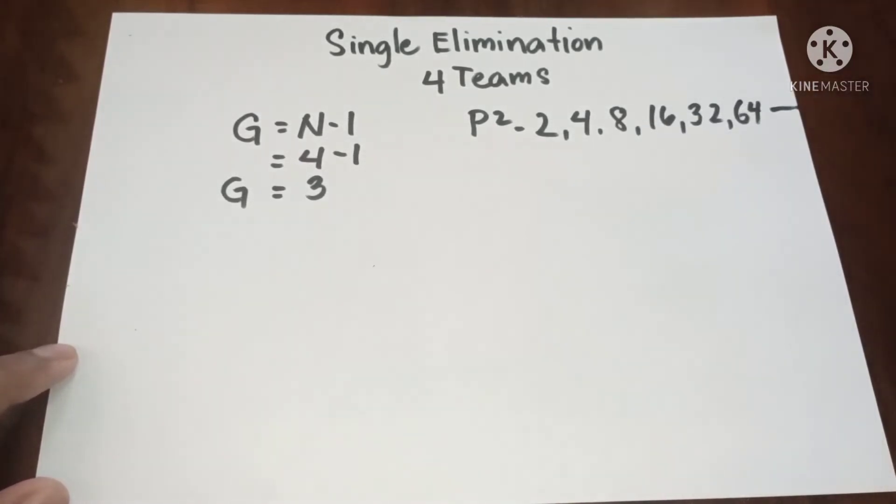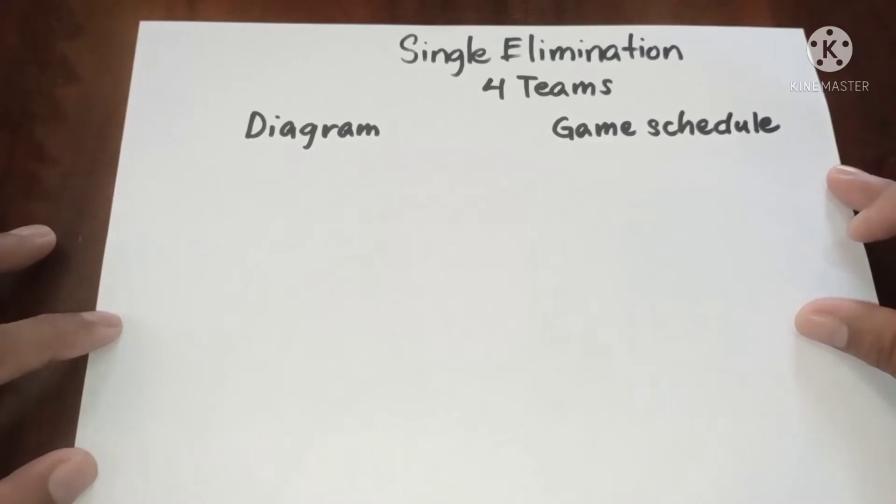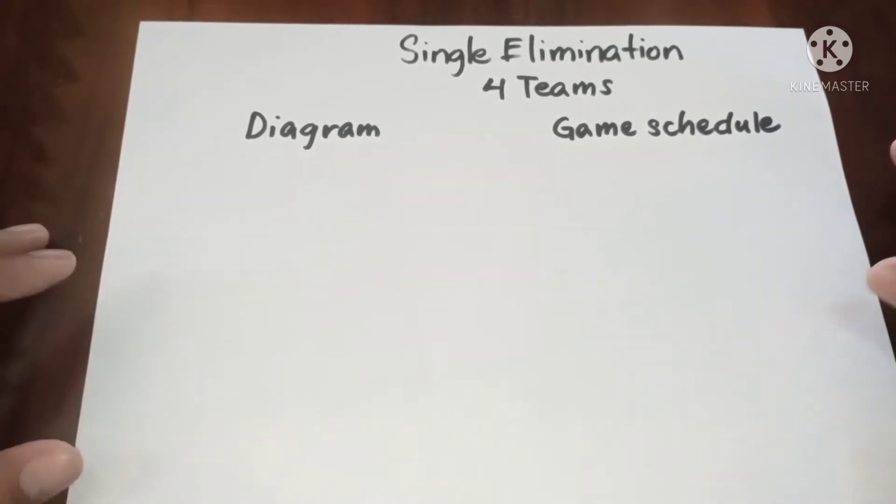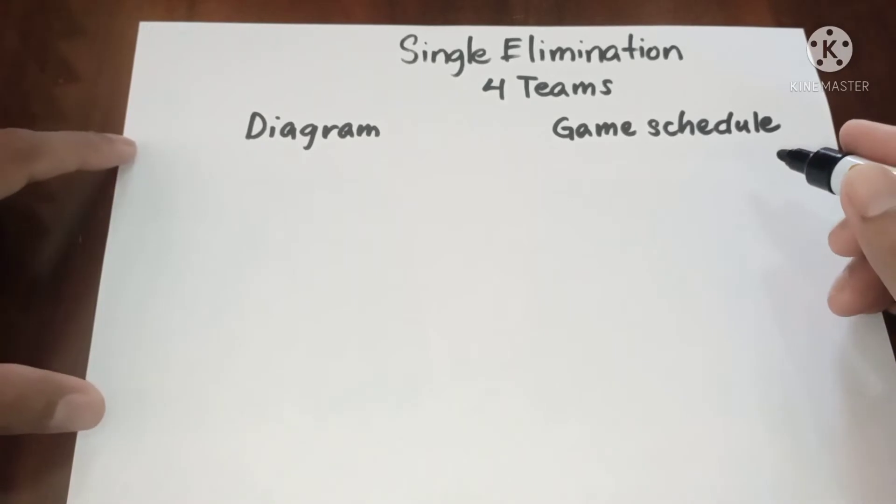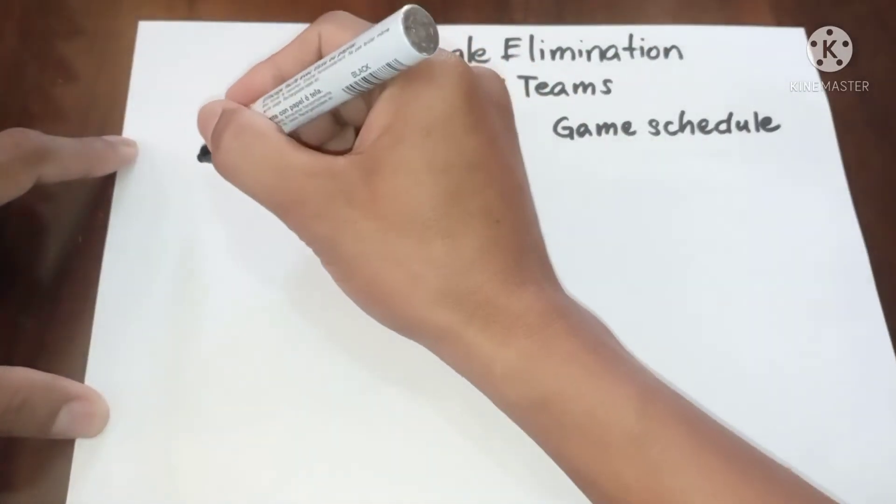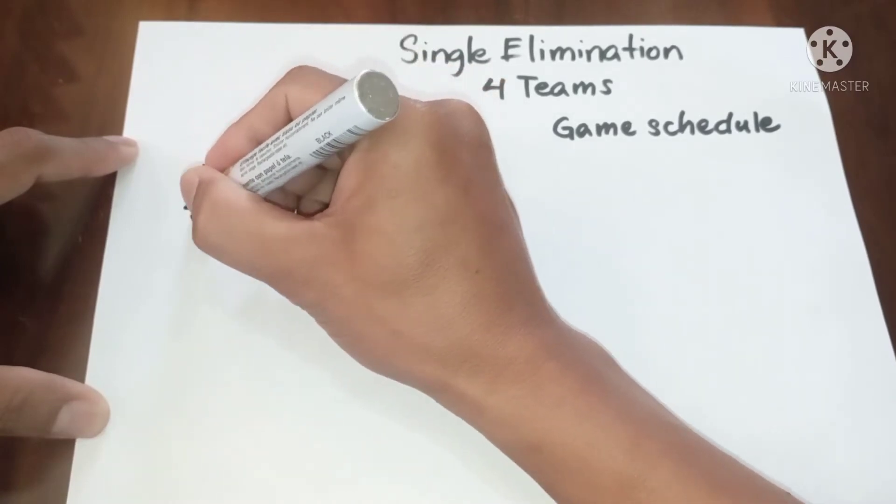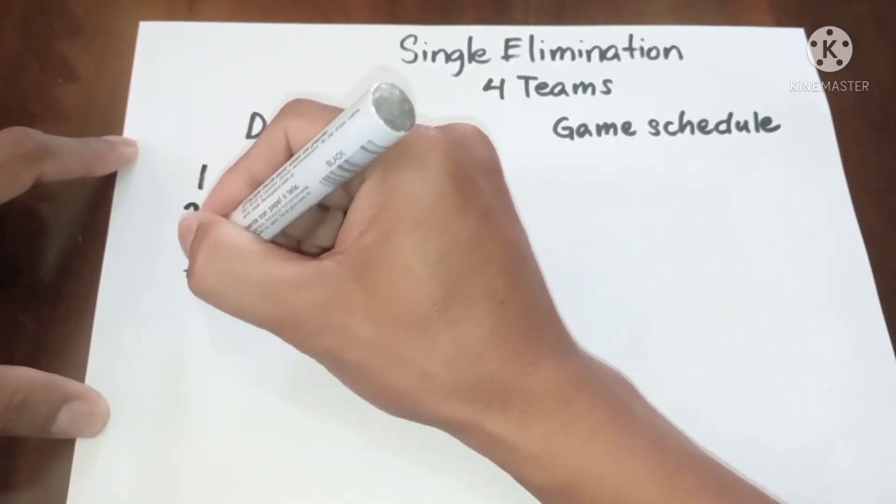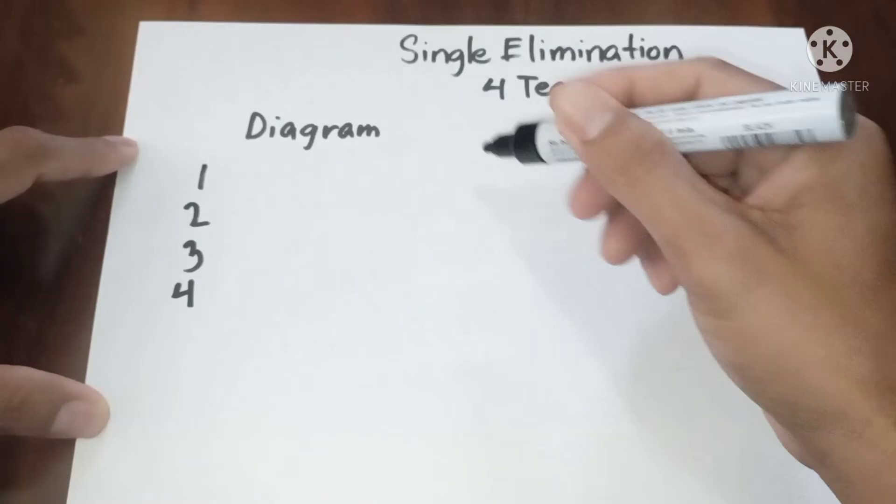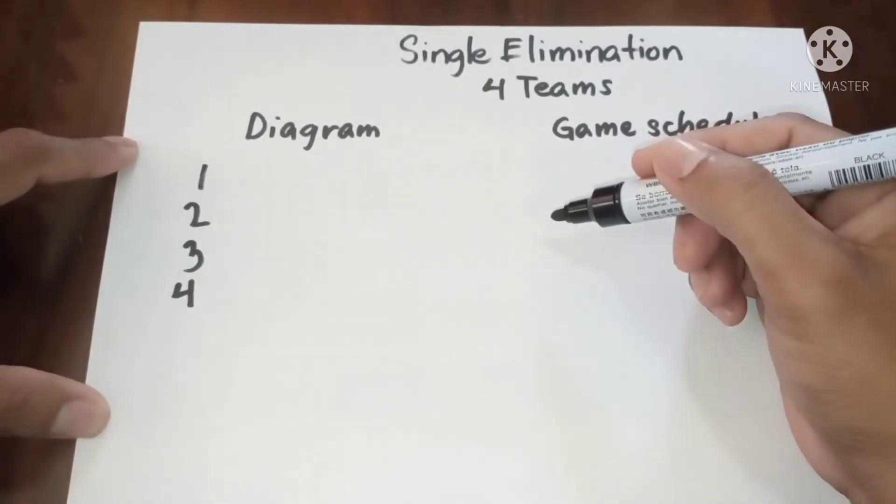Now let's proceed to diagram and game schedule. In the same manner, we're going to draw the number of teams vertically downward. So all of them will be playing in the first round.